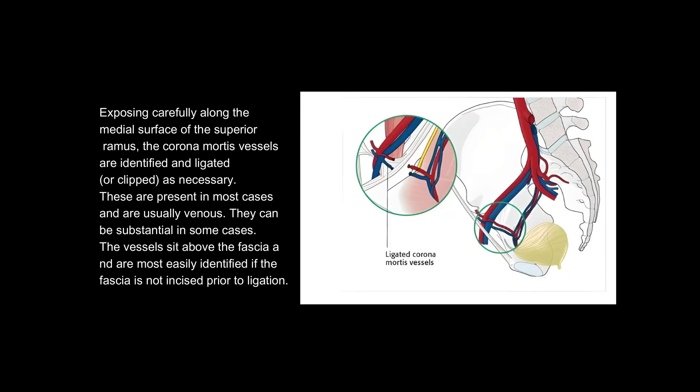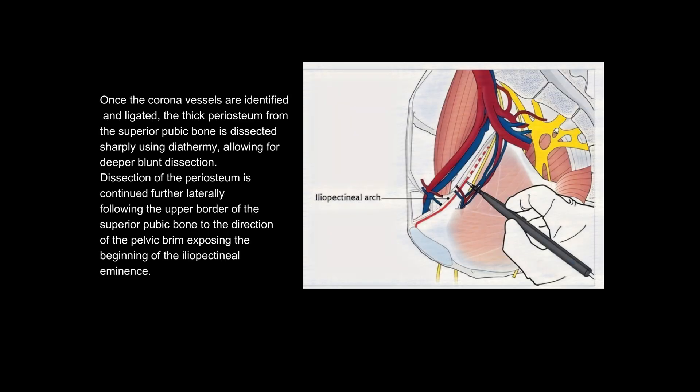Exposing carefully along the medial surface of the superior ramus, the corona mortis vessels are identified and ligated or clipped as necessary. These are present in most cases and are usually venous. They can be substantial in some cases. The vessels sit above the fascia and are most easily identified if the fascia is not incised prior to ligation. Once the corona vessels are identified and ligated,